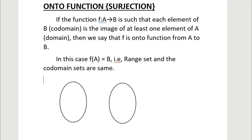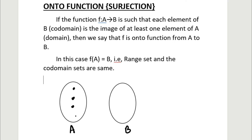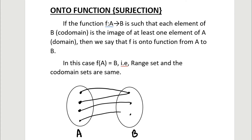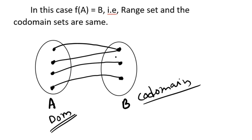If we draw the diagram, suppose we have some elements in the first set — this is set A and this is set B. In set A, suppose we have four elements. This element maps with the first element, this also maps with the first element, this is the image of the third element, and this is the image of the fourth element. So, look here in set B, we have only three elements and each of them is the image of any one of the four elements present in the domain set. All the elements of the codomain set are images of elements present in the domain set.